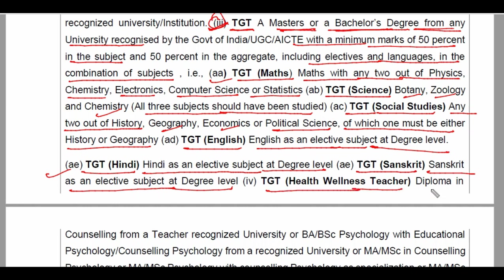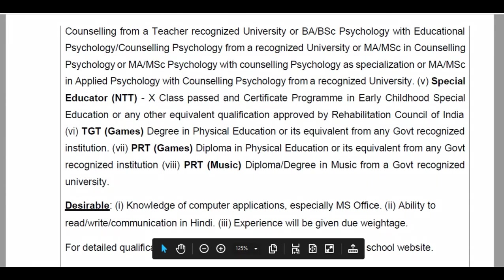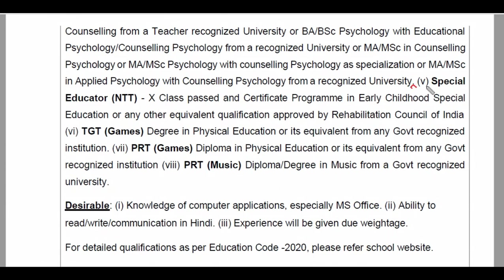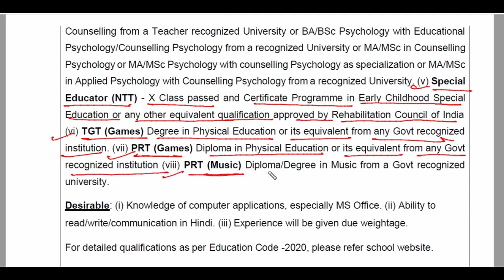TGT Hindi: Hindi as an Elective Subject at Degree Level। TGT Sanskrit: Sanskrit as an Elective Subject at Degree Level। TGT Health & Wellness Teacher ke liye Diploma in Counseling from a recognized university, or BA/BSc Psychology with Educational Psychology or Counseling, or MA/MSc in Counseling। TGT Games: Degree in Physical Education or equivalent। PRT Games: Diploma in Physical Education or equivalent। PRT Music: Diploma or Degree in Music from a Government Recognized University।